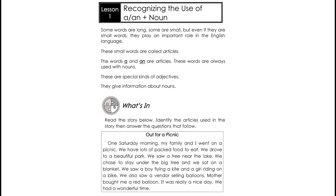What's In? Read the story below. Identify the articles used in the story, then answer the questions that follow. Let us read the story: Out for a Picnic. One Saturday morning, my family and I went on a picnic. We have lots of packed food to eat. We drove to a beautiful park. We saw a tree near the lake. We chose to stay under the big tree and we sat on a blanket. We saw a boy flying a kite and a girl riding a bike. We also saw a vendor selling balloons. Mother bought me a red balloon. It was really a nice day. We had a wonderful time.